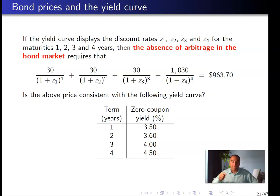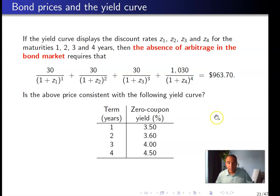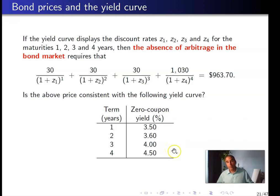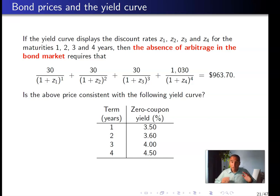The yield curve tells us: whatever you receive in one year should be discounted at 3.5%; in two years at 3.6%; in three years at 4%; and in four years at 4.5% — for bonds with the same risk characteristics as this bond.